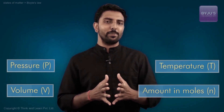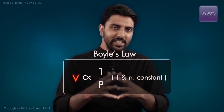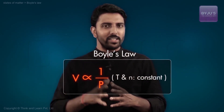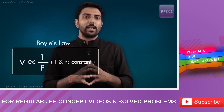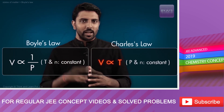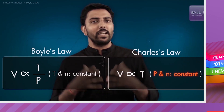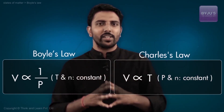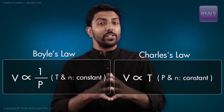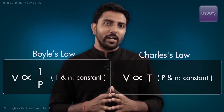The simple gas laws describe the relationships between pairs of these properties. For instance, one simple gas law describes how volume varies with pressure at constant temperature and constant amount of gas in moles. Another law describes how volume varies with temperature at constant pressure and constant amount of gas. These laws were deduced from observations in which two of the four basic properties were held constant in order to figure out the relationship between the other two.